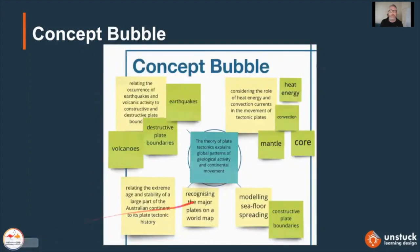Let's look at a simple example. The learning outcome is: the theory of plate tectonics explains global patterns of geological activity and continental movement. This is what I want students to understand. Within that, I'm going to break it down further because it relates to the extreme age and stability of a large part of the Australian continent and its plate tectonic history.